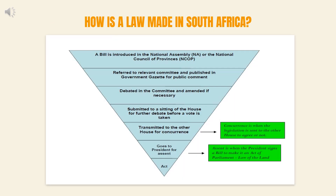The following diagram shows you how law is made in South Africa. It begins with a bill being introduced in the National Assembly or National Council of Provinces. This bill is then referred to the relevant committee and published in the Government Gazette for public comment. It is then debated in committee and amended if necessary. It is submitted to a sitting of the house for further debate before a vote is taken. It is then transmitted to the other house for concurrence, goes to the president for assessment, and is then created into an act.